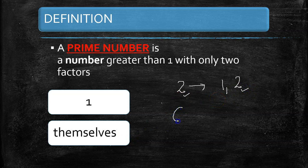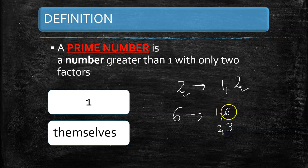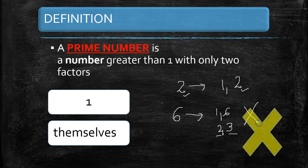Now consider 6: its factors include 1, 2, 3, and 6 — because 1 × 6 = 6 and 2 × 3 = 6. So 6 is not a prime number, since it has more than two factors.